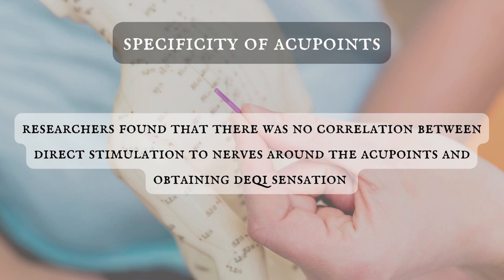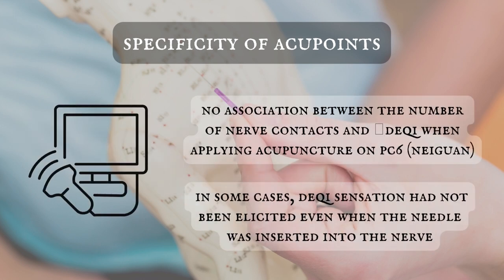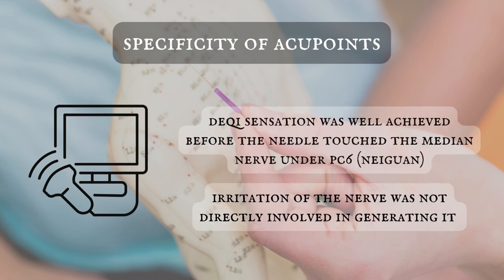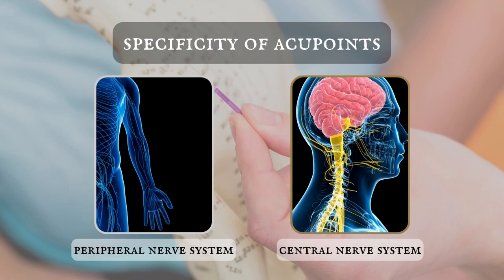Although De Qi is affected by nerve innervations, researchers found that there was no correlation between direct stimulation to nerves around the acupoints and obtaining De Qi sensation. In an ultrasound imaging study, researchers found that there was no association between the number of nerve contacts and De Qi when applying acupuncture on Nei Guan. In some cases, De Qi sensation had not been elicited even when the needle was inserted into the nerve. Similar studies found that De Qi sensation was well-achieved before the needle touched the median nerve, which suggests that irritation of the nerve was not directly involved in generating it. Therefore, De Qi should be a physiological phenomenon triggered by both the central and peripheral nerve systems rather than a simple reaction to direct stimulation.